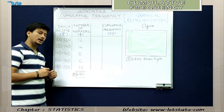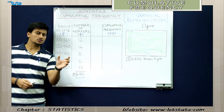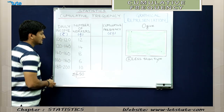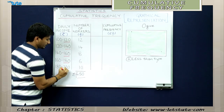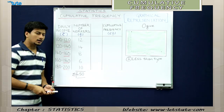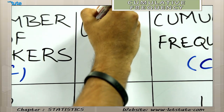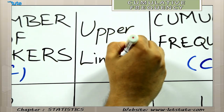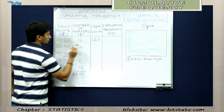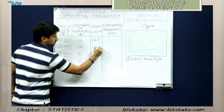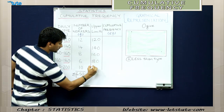In the less than type, we take the upper limits. Whenever we say 'less than something,' that something has to be of the higher value. So we are going to say: less than 120, less than 140, less than 160, less than 180, and less than 200. Let's form a column for all these upper limits. So 120 is the upper limit for the first group, 140 for the second, 160 for the third, 180 for the fourth, and 200 for the fifth.